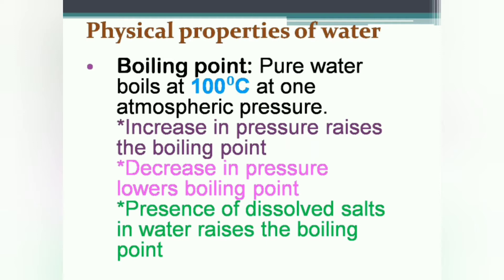In a similar way we can explain why the boiling point of water is lowered on decreasing the pressure. This knowledge is also helpful in explaining why at high altitudes a pressure cooker is useful to cook food. With increase in altitude the pressure goes on lowering, and due to low pressure water boils at a low temperature. If the water gets boiled on little heating, food cannot be cooked properly. Therefore a pressure cooker is used to increase the pressure and raise the boiling point.